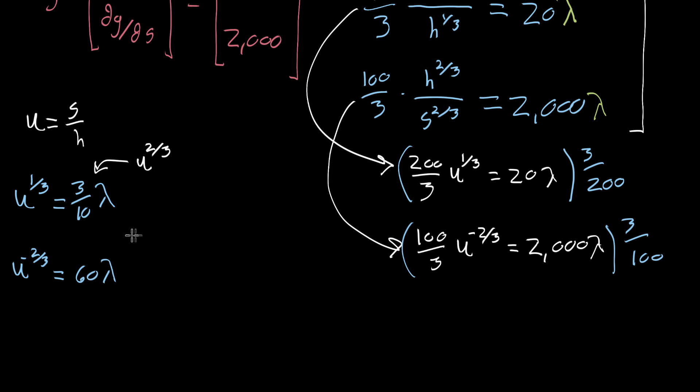So when I do that to the top part, like I said, that U to the one third times U to the two thirds ends up being U, and then on the right side we have our three tenths lambda, but now U to the two thirds. And then on the bottom here, when I multiply it by U to the two thirds, that right side becomes one because it cancels out with U to the negative two thirds, and the right side is 60 times lambda times U to the two thirds.